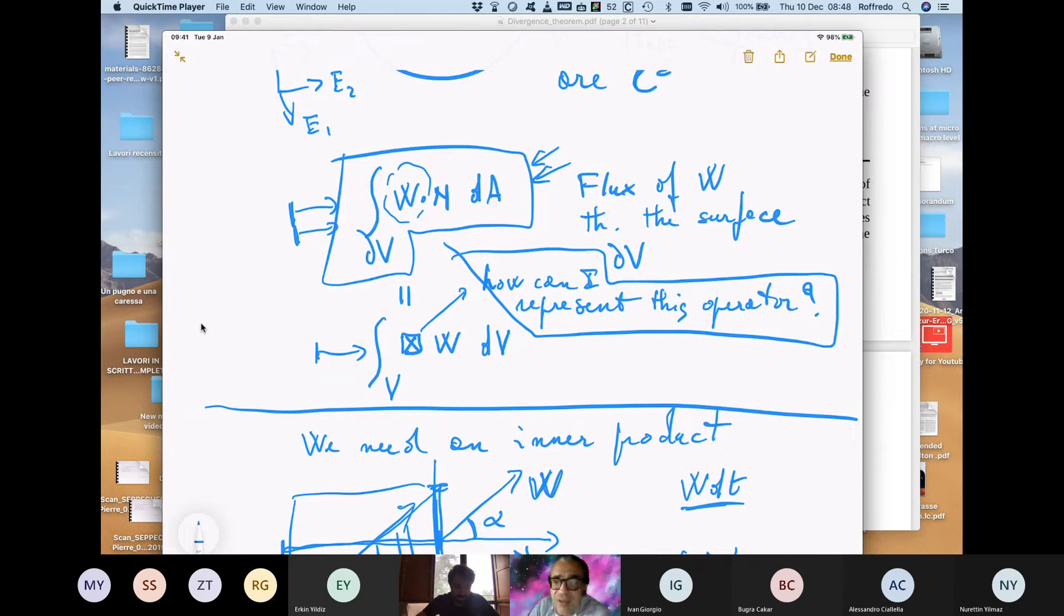However, this formula, changing the meaning of this vector field W, became essential in many other parts of physics, including continuum mechanics, electrodynamics, general relativity, and things like that.